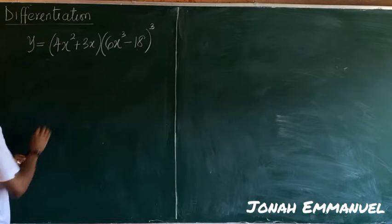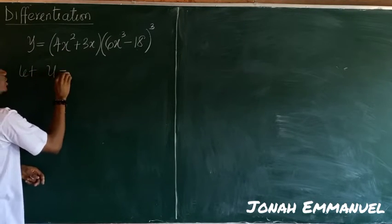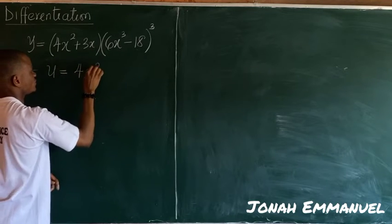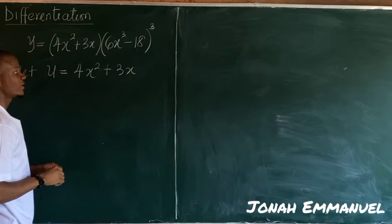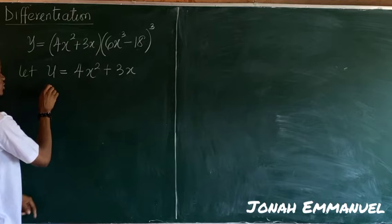So since this one here is multiplying this, I will now employ the concept of product rule. So we said for the first thing here, I'll say let u be equal to what you have here: 4x squared plus 3x. Next up I'll differentiate u with respect to x, so I'll have that du/dx is equal to 8x plus 3.